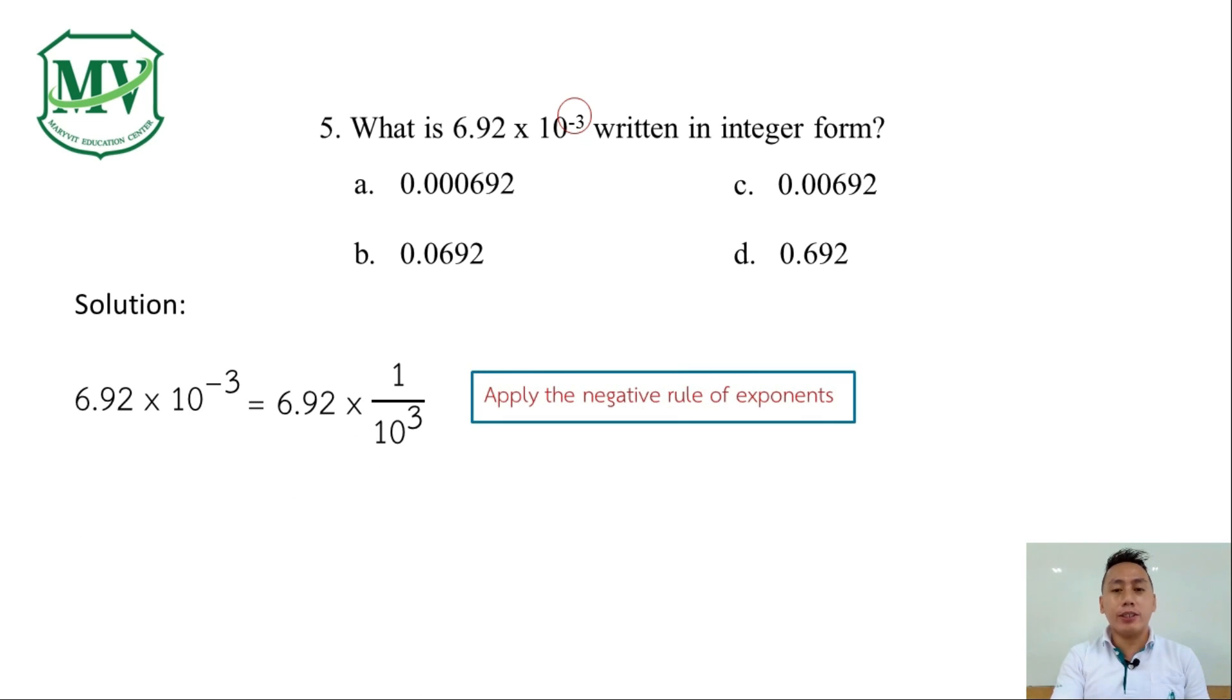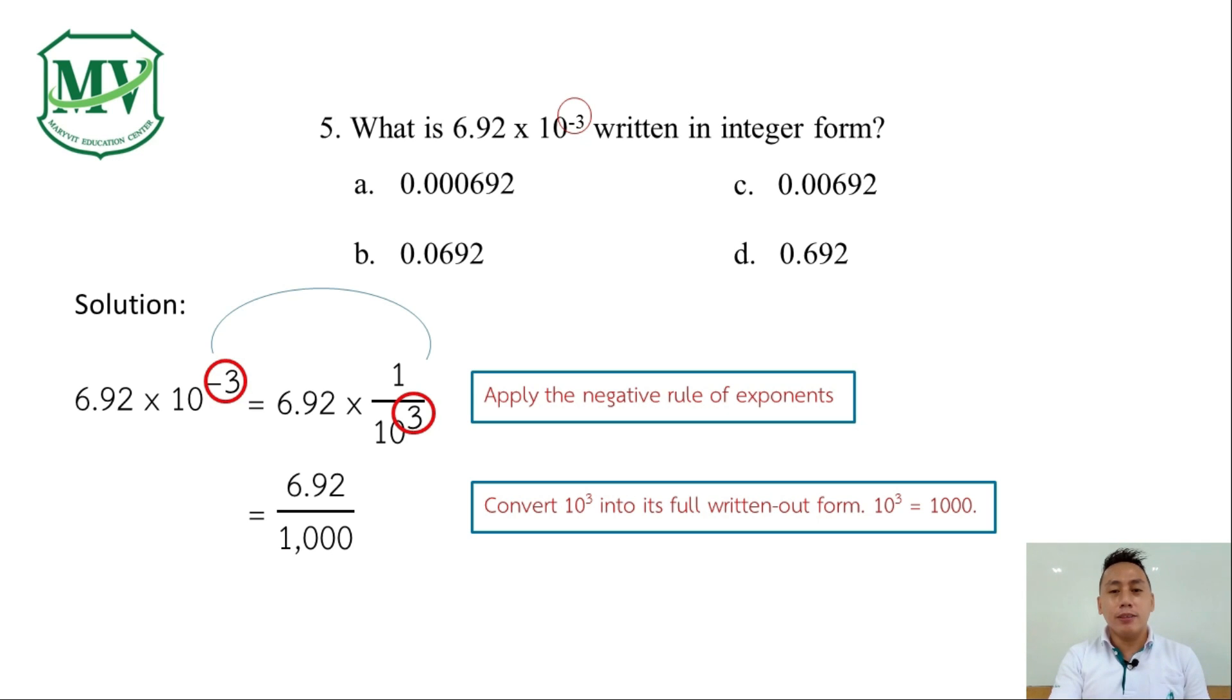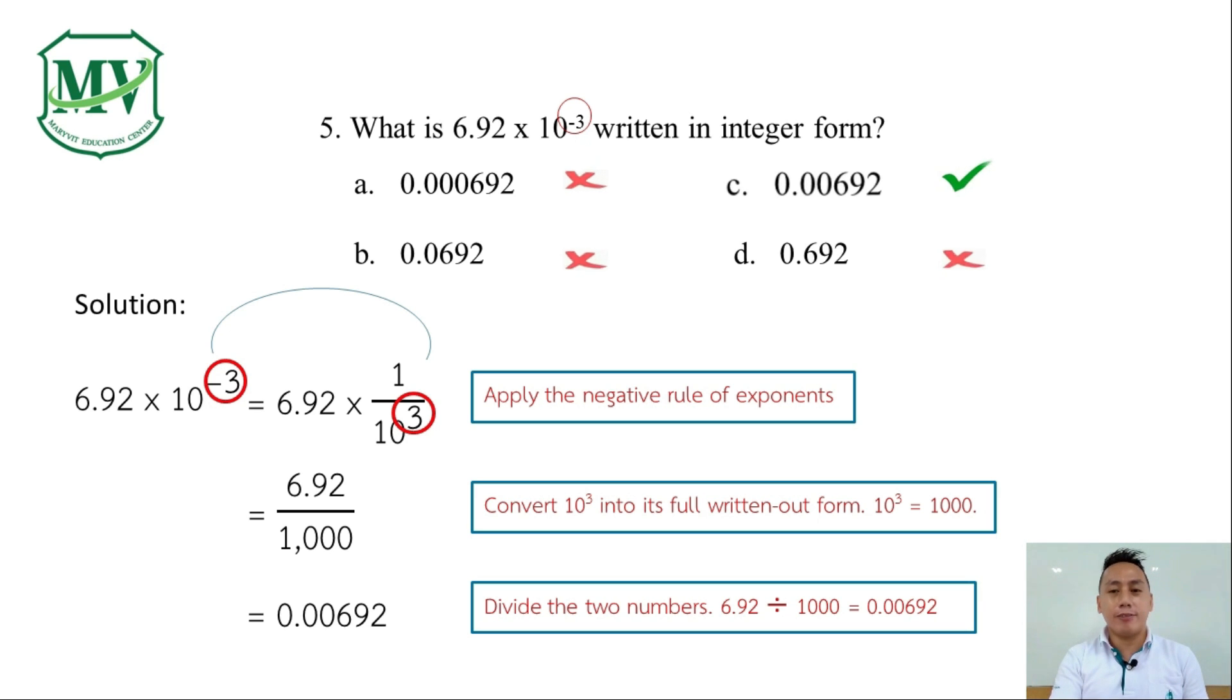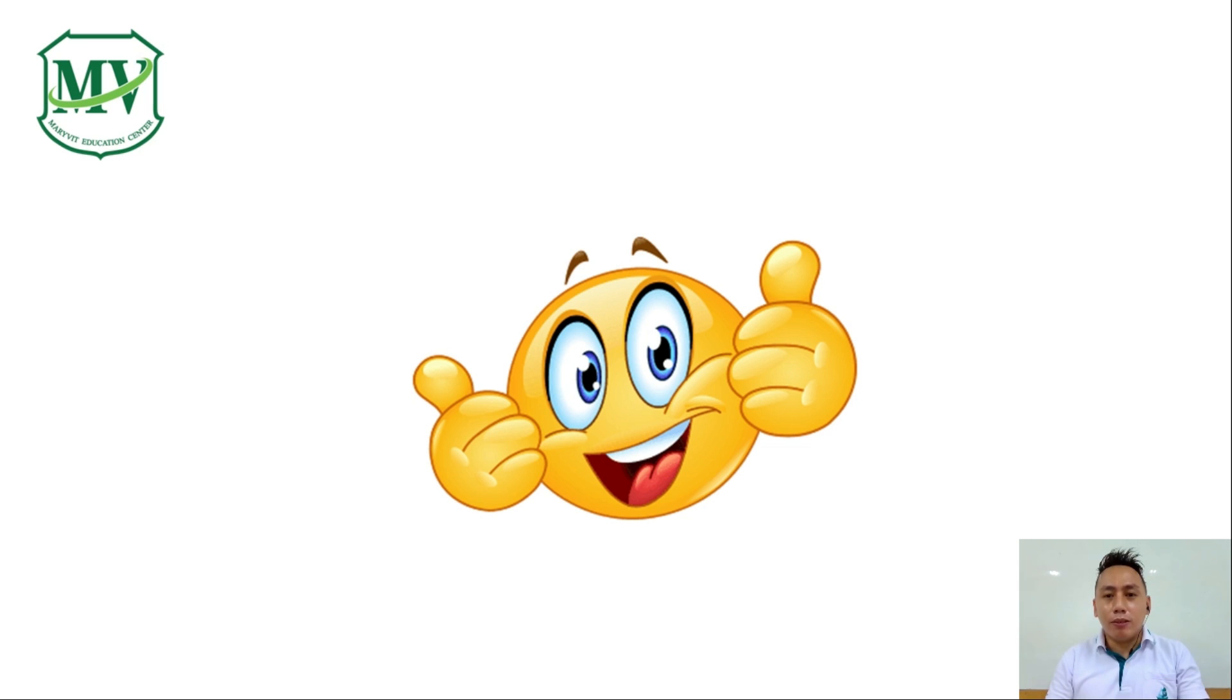Our exponents is negative so we need to apply first the negative rule of exponents. Simply move 10 into the denominator and make its exponents positive. Next convert 10 raised to the power of 3 into its full written out form. 10 raised to 3 is equal to 1,000. Lastly divide the two numbers. 6.92 divided by 1,000 is equal to 0.00692 and that's letter C. That's all for this activity. See you next episode. Have a good day.